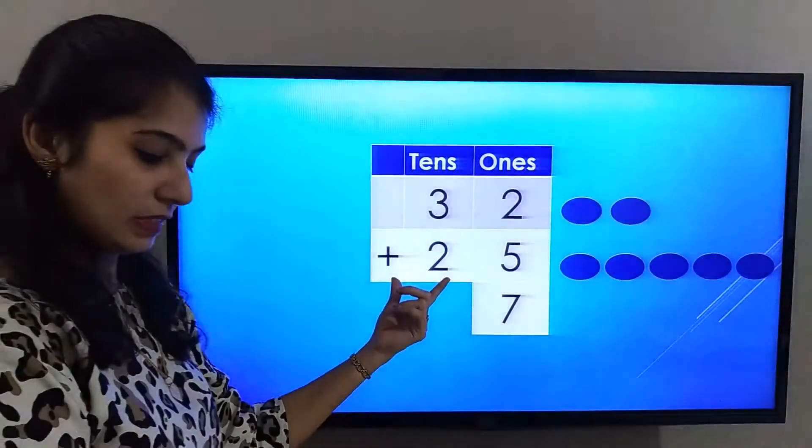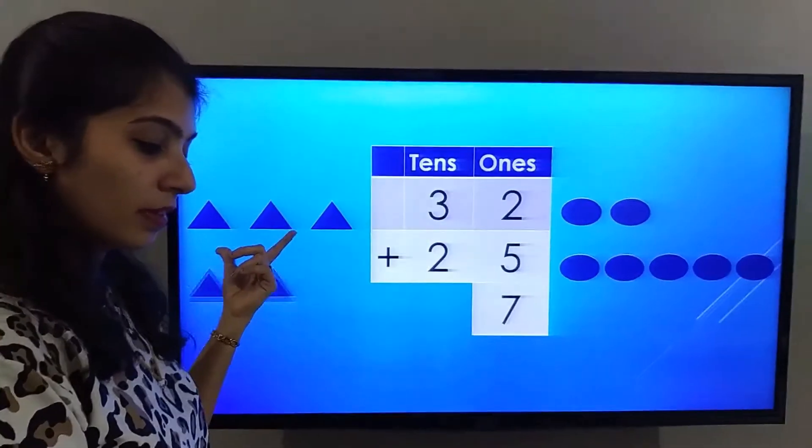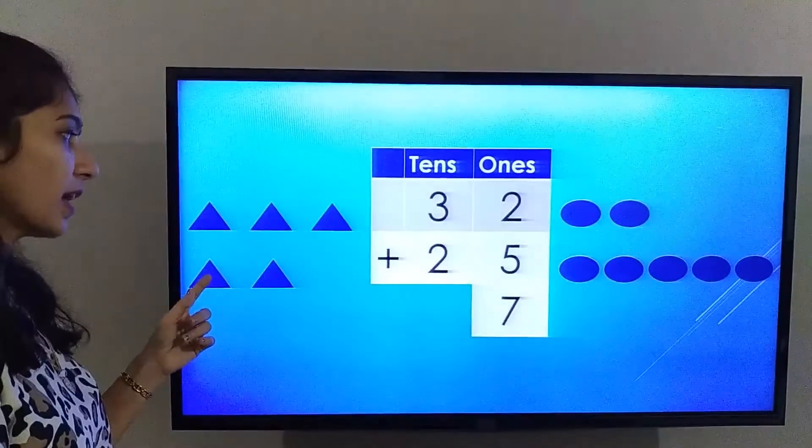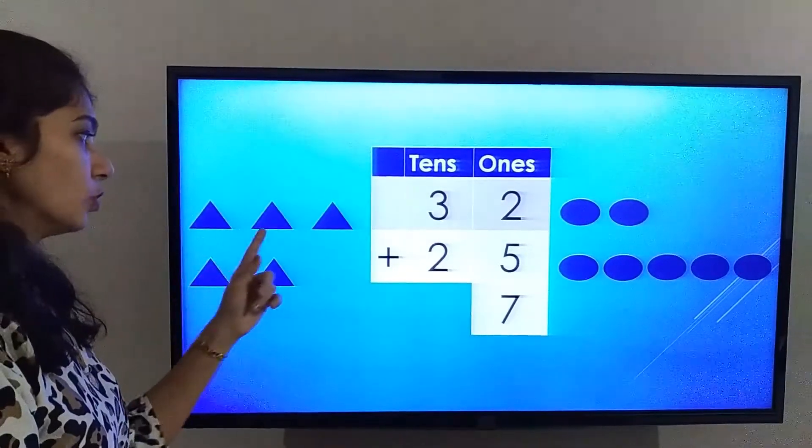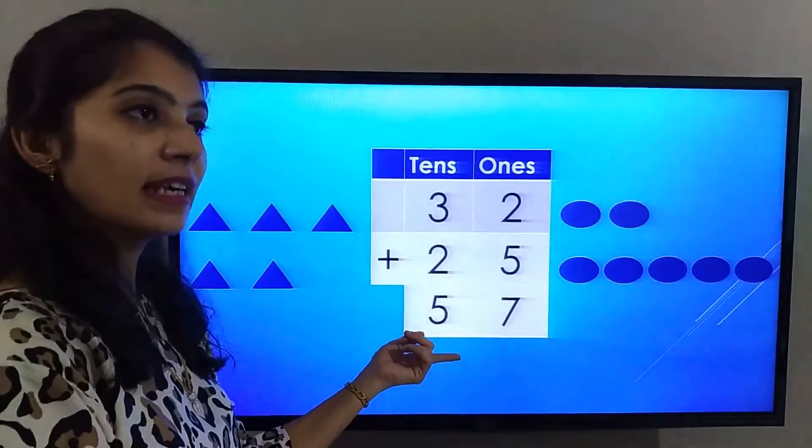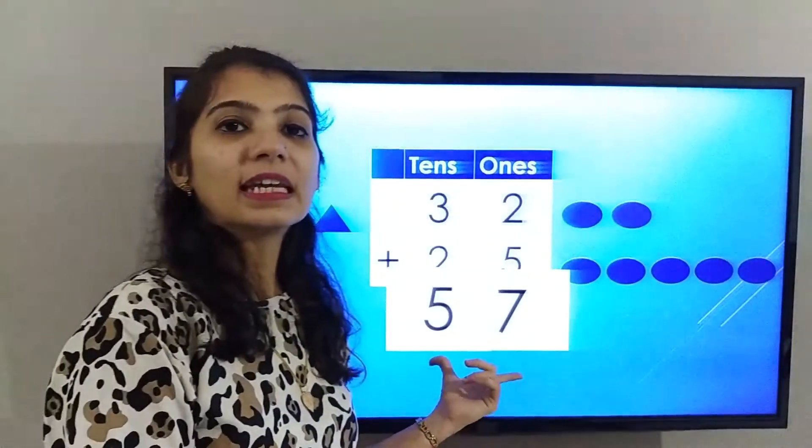Now let's solve the tens place. The number in the tens place is 3 plus 2. Let's count all the triangles together. 1, 2, 3, 4, 5. The answer in the tens place is 5. The final answer we got is